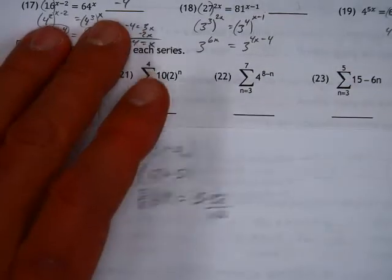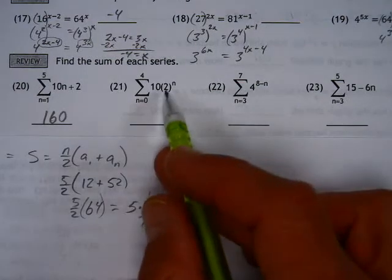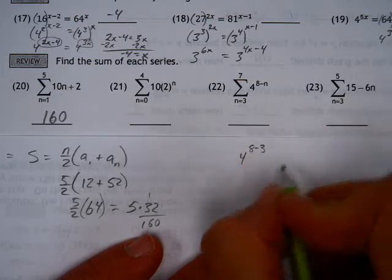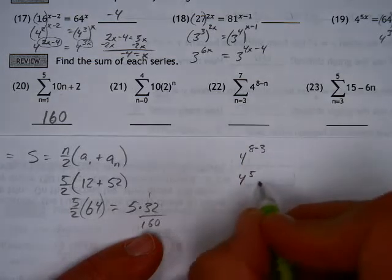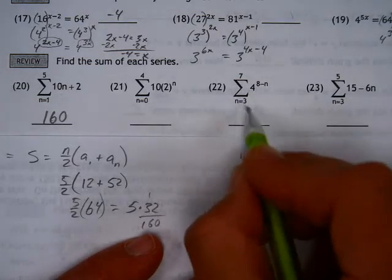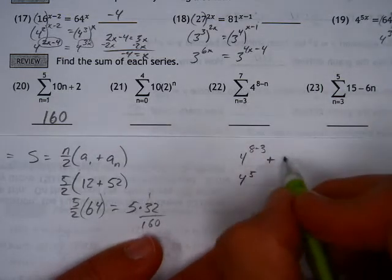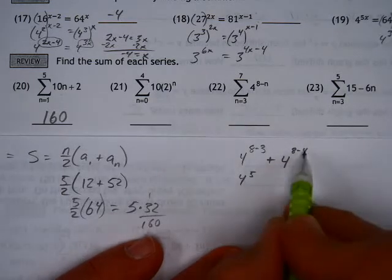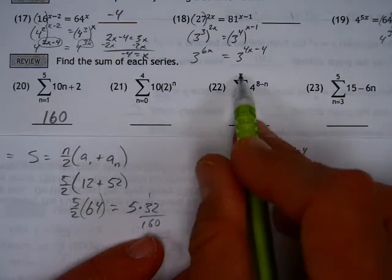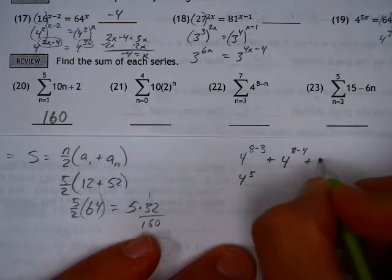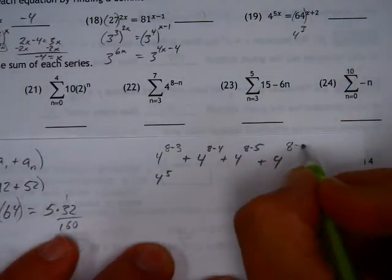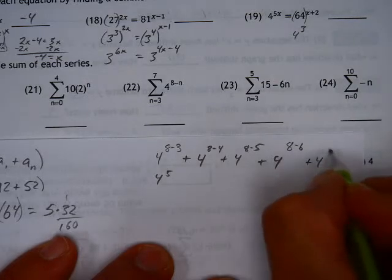I'll do this one because this one's probably more difficult than this one. When you plug in a 3, you get 4 to the 8 minus 3rd power. That's 4 to the 5th power. The summation basically means we're also going to say 4 raised to the 8 minus 4. That 4 is the next one in line between 3 and 7. Plus 4 to the 8 minus 5, and how far do we go with this? 4 to the 8 minus 6, plus 4 to the 8 minus 7.